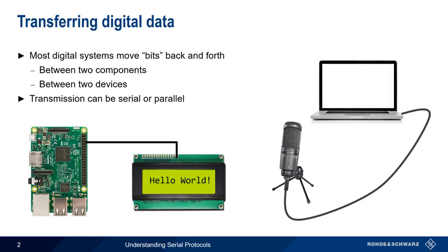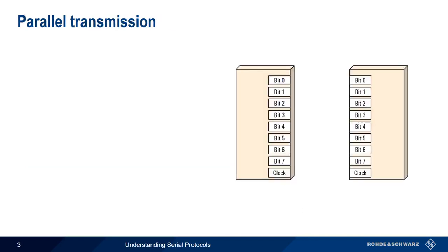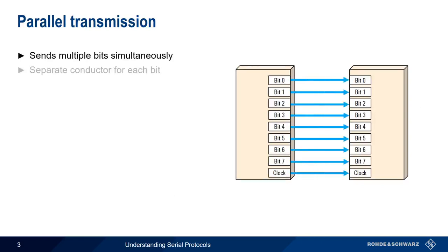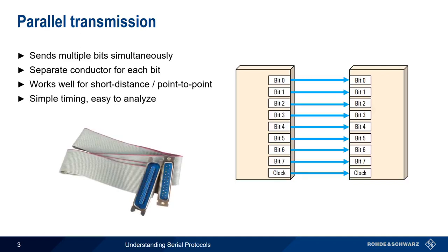Let's start by taking a look at parallel transmission. Parallel transmission moves multiple bits simultaneously between transmitter and receiver, usually with a separate conductor per bit. Parallel connections work well for short distance and point-to-point connections. They have simple timing and are relatively easy to analyze. But it's now largely being replaced by serial transmission.